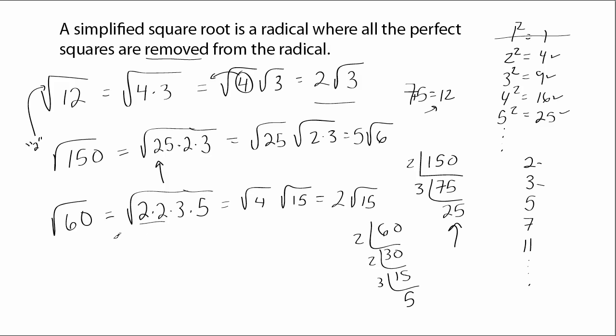So you could do this by trial and error. Whatever number, break it down into its perfect squares if there are any, and then just keep going. Or you can be more systematic and use prime factorization. Break down the numbers and then put them together as perfect squares and do your math.